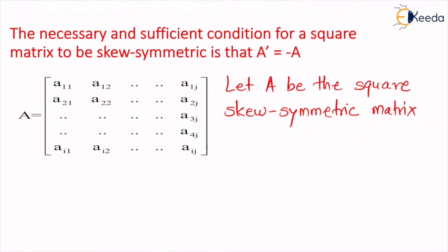If you observe the elements of a matrix, the first element is a11 since it is in the first row and first column. The second one is a12, this is in first row second column, and similarly a1j. In the last row it is ai1, ai2, till aij. So I can say that any element of this matrix A can be represented as aij, where i is the row number and j is the column number.